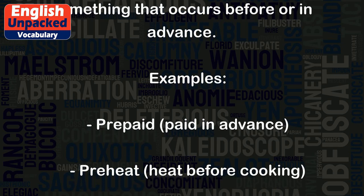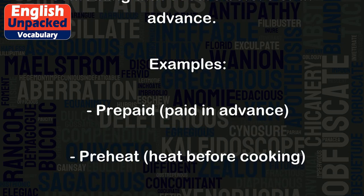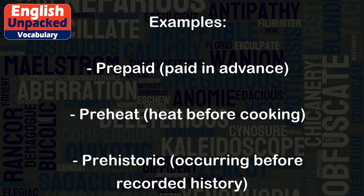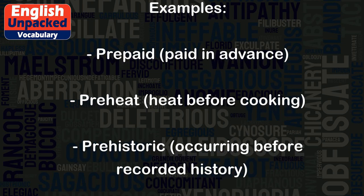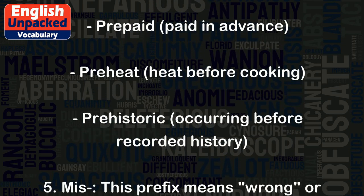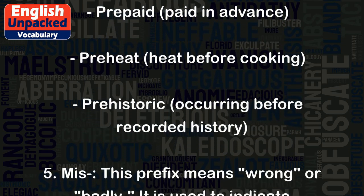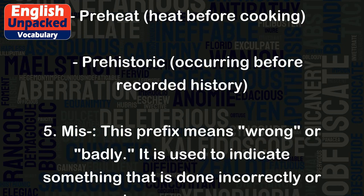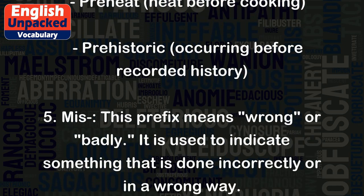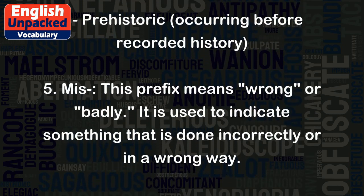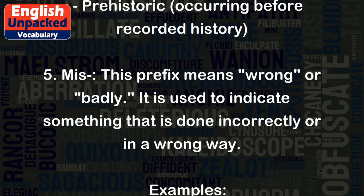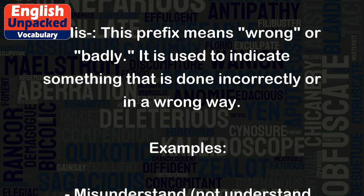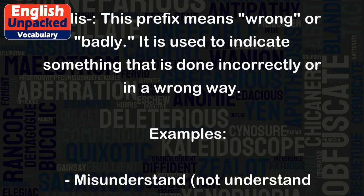Examples: Prepaid — paid in advance. Preheat — heat before cooking. Prehistoric — occurring before recorded history. 5. Mis. This prefix means wrong, or badly. It is used to indicate something that is done incorrectly or in a wrong way.